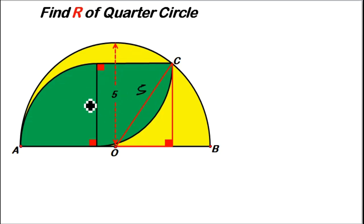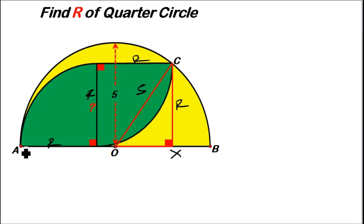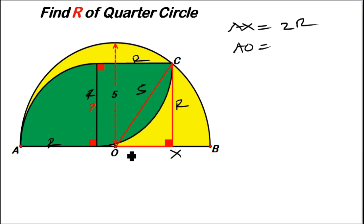Now if the quarter circle has a radius of r, meaning this side is r, then this side is also r, and from this point to this point is also r. If we let this point be X, then from A to X is r plus r, that is 2r. Then AO is the radius of the semi-circle, which we've been given to be 5. So AO is 5 and AX is 2r.